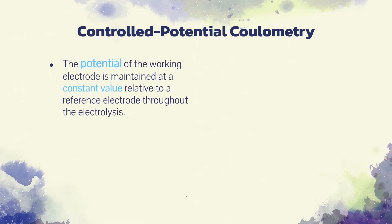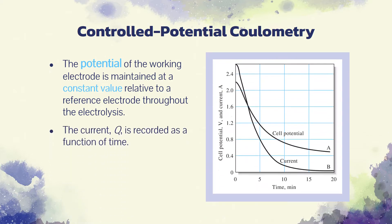Potentiostatic methods are performed with the potential of the working electrode being maintained at a constant value relative to a reference electrode throughout the electrolysis. In controlled potential coulometry, the electrolysis current is recorded as a function of time to give a curve similar to curve B in the figure. The analysis is then completed by integrating the current-time curve to obtain the charge, and from Faraday's law, the amount of analyte.